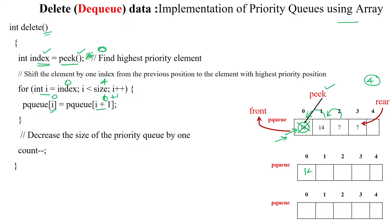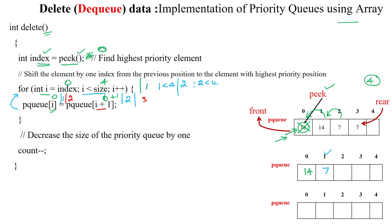When i is zero, 14 is written into index zero. Then i is incremented to one; since one is less than four, the element at index two (seven) is assigned into index one. Then i increments to two; since two is less than four, the element at index three is written into index two. The third index value is seven, so seven is written into index two.